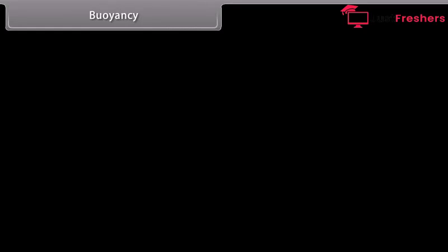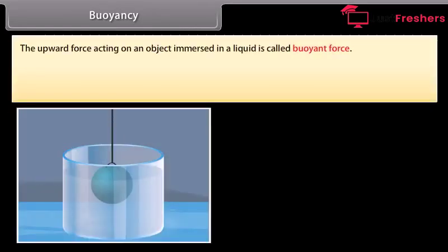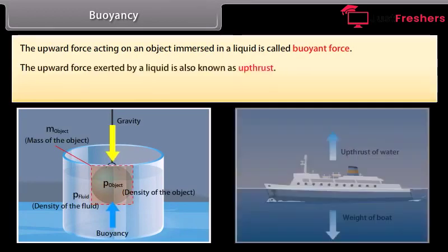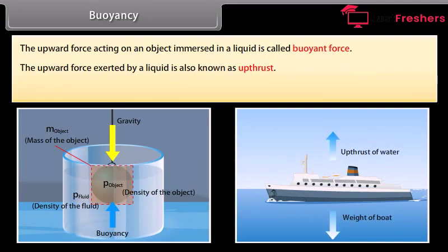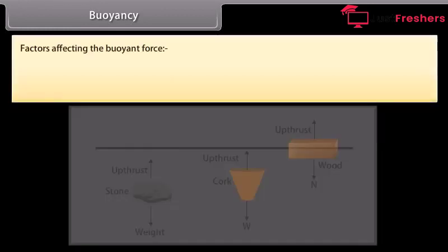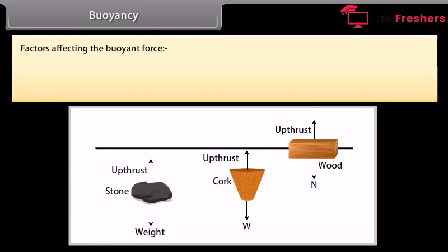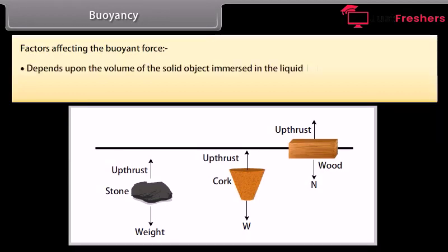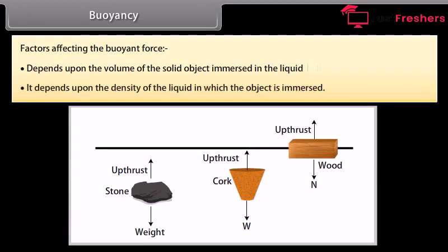Buoyancy: The upward force acting on an object immersed in a liquid is called buoyant force, also known as up-thrust. The tendency of a liquid to exert an upward force on an object placed in it is called buoyancy. Buoyant force depends upon the volume of the solid object immersed in the liquid and upon the density of the liquid in which the object is immersed.